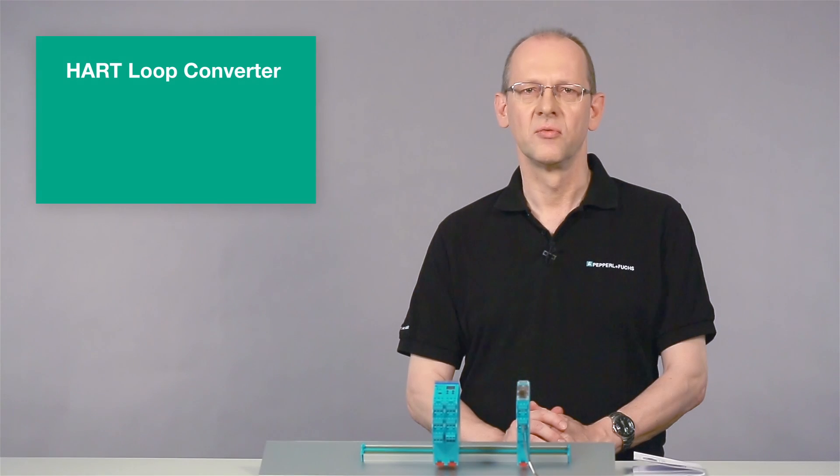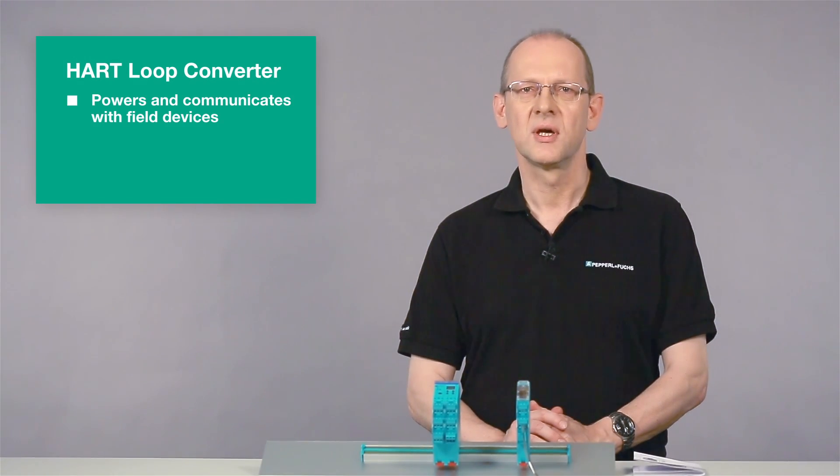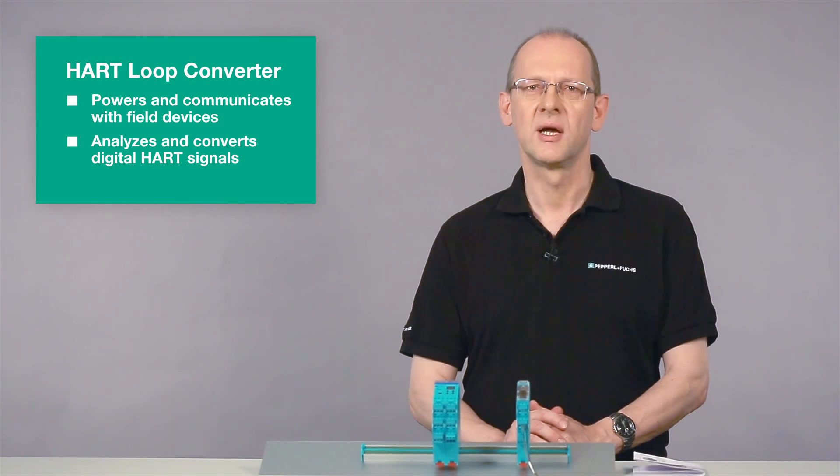The hard loop converter powers and communicates with field devices. It is able to analyze up to four digital hard signals and convert them into up to three 4 to 20 mA signals.